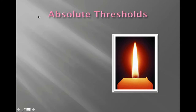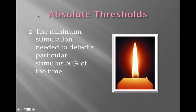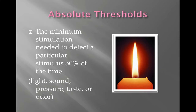Absolute threshold is simply defined as the minimum level of stimulation needed to detect a particular stimulus 50% of the time. This can include any of the five senses — light, sound, pressure, taste, or odor. Our threshold means that we detect it 50% of the time. It can be determined, but unless you're looking at vision and hearing, we typically don't measure absolute threshold. There's a website on the PowerPoint that can help you determine your absolute threshold for hearing.